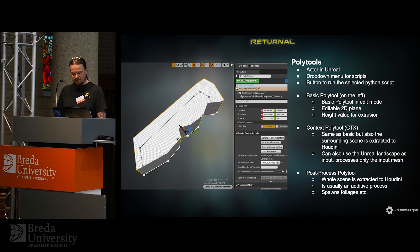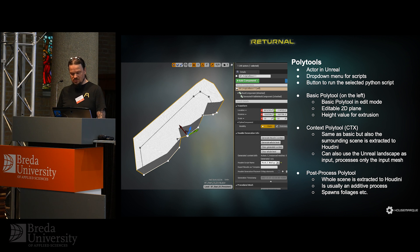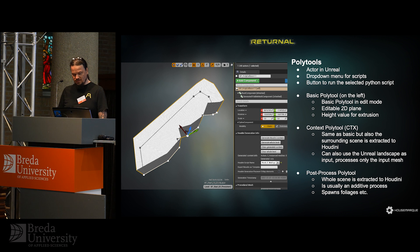Polytools are actors in Unreal. They have a dropdown for scripts and a button to run the selected script. The basic polytool type has an editable 2D shape and a height value for extrusion. One variant was the context polytool — basically the same, but it also extracted the surrounding scene, including the Unreal landscape as input. The third type was post-process, which extracted only the surrounding scene and usually did additive work like spawning foliage.